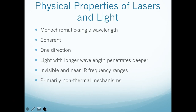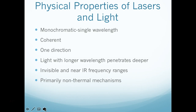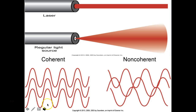The physical properties of laser light: it's monochromatic — single wavelength. It's coherent — it goes in one direction. Light with longer wavelength will penetrate deeper, so the longer the wavelength, the deeper the penetration. We saw on the spectrum that it's invisible; it's near the infrared frequency range, and primarily you're going to get non-thermal mechanisms with this. We do use this a lot with acute tendinopathies, and the research is showing some really good results. Here it's showing the difference between coherent and non-coherent — a laser versus regular light — monochromatic, one direction, and coherent, versus light that kind of disperses out.